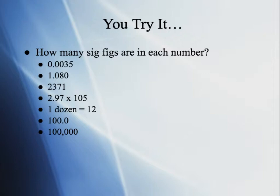Let's see if you got it right. First, 0.0035 — the leading zeros don't count, so this is two sig figs. Next, 1.080 — the zero between the eight and zero is a sandwiched zero so it counts, and the trailing zero comes after a decimal point so it counts as well. This measurement has four significant figures. It tells you the measurement falls right on the 1.08 line and we estimate it to be zero further.